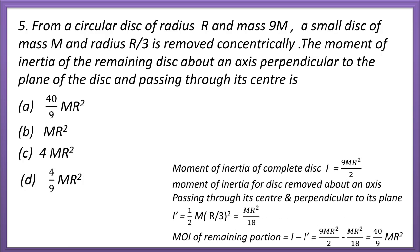Question 5. From a circular disk of radius R and mass 9M, a small disk of mass M and radius R/3 is removed concentrically. The moment of inertia of the remaining disk about an axis perpendicular to the plane of the disk and passing through its center is: 40/9 MR², MR², 4MR², or 4/9 MR²? Moment of inertia of complete disk = 9MR²/2; moment of inertia of disk removed = ½·M·(R/3)² = MR²/18. Remaining portion: I − I' = 40/9 MR². The correct answer is option A.